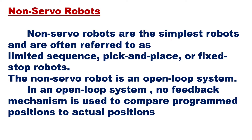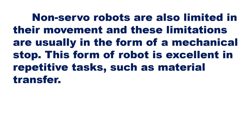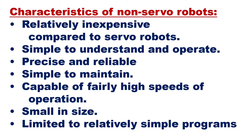Non-servo robots are the simplest robots and are often referred to as limited sequence, pick and place, or fixed stop robots. The non-servo robot is an open loop system — no feedback mechanism is used to compare programmed positions to actual positions. Once the arm reaches a certain position, a position switch gives a signal to the controller, which deactivates the task. Non-servo robots are limited in their movement, usually in the form of mechanical stops. This form of robot is excellent in repetitive tasks such as material transfer, and they are relatively inexpensive compared to servo robots.